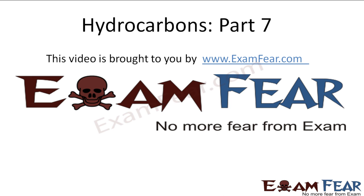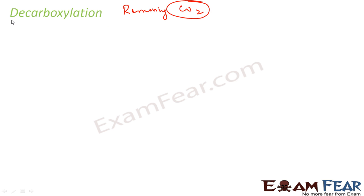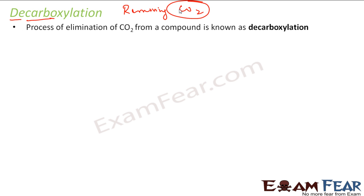Hello friends, this video on hydrocarbons part 7 is brought to you by examfear.com. Now we will study a very interesting topic called decarboxylation. The name itself says decarboxylation, which means removing CO2. 'De' means removing, 'carb' is carbon, and 'oxylation' is the process. So the process of elimination of carbon dioxide from a compound is called decarboxylation.